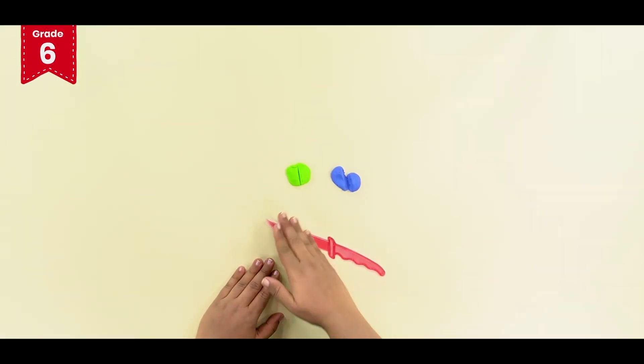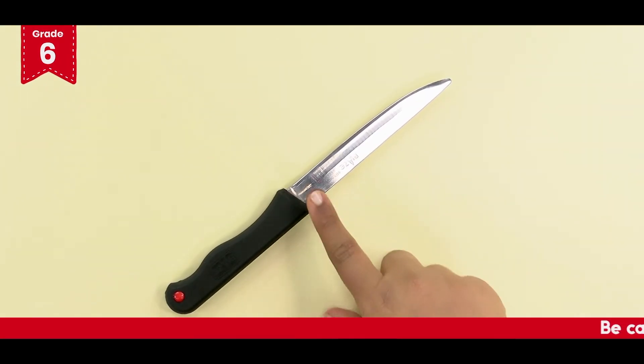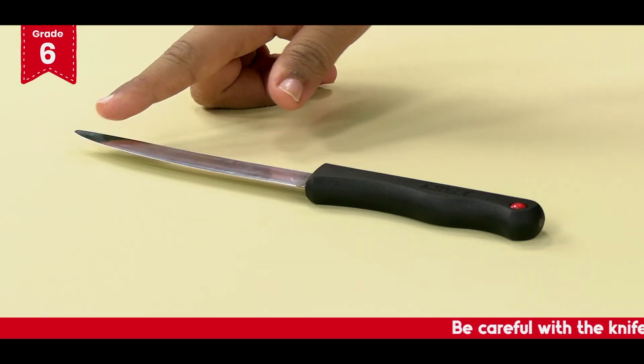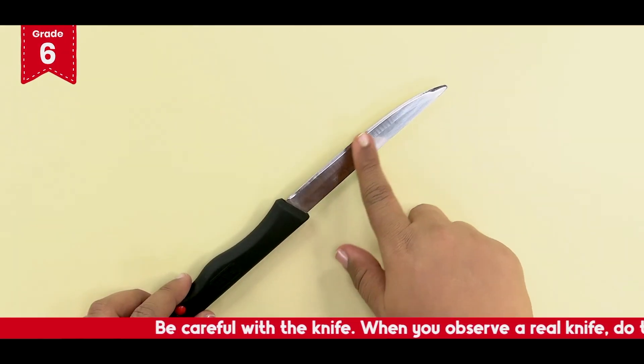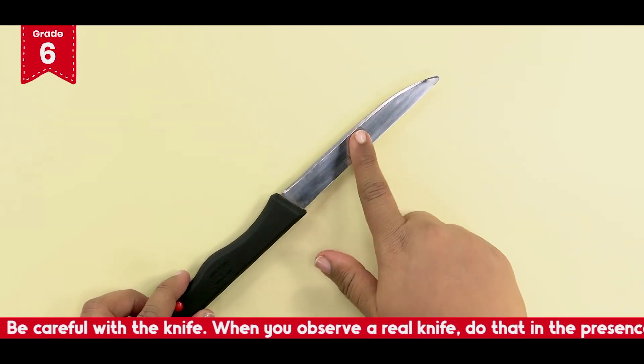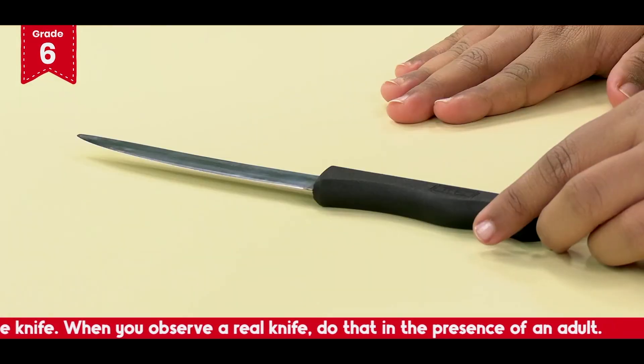Well kids, this is what wedges do. They make our work easier and that's why wedge is a simple machine. The sharp edge of the knife contains two inclined planes at a smaller angle which makes it sharp and helps us to cut things easily.